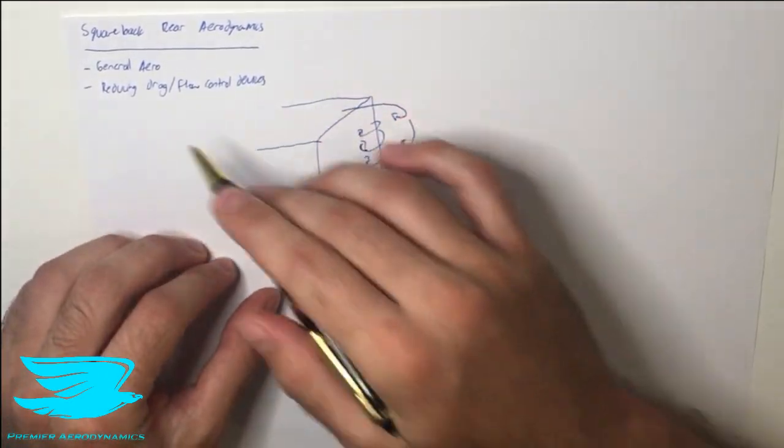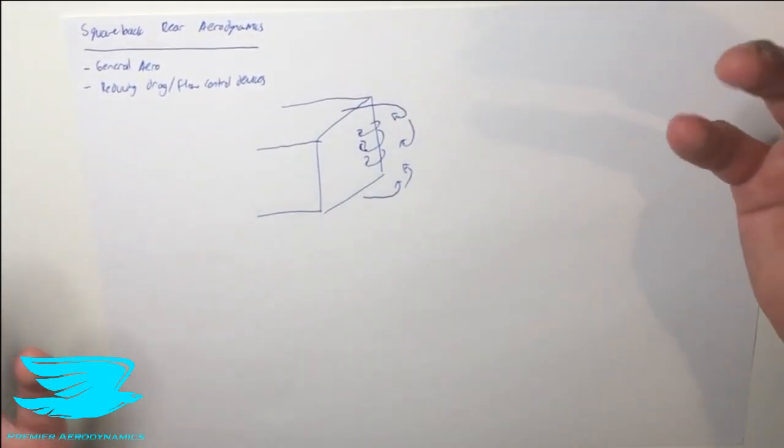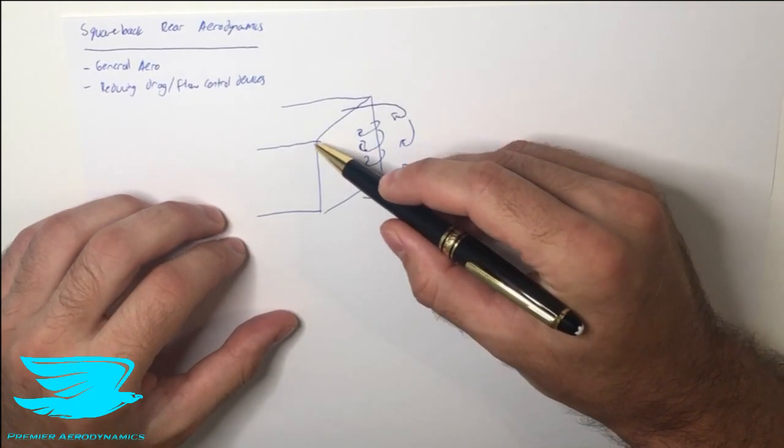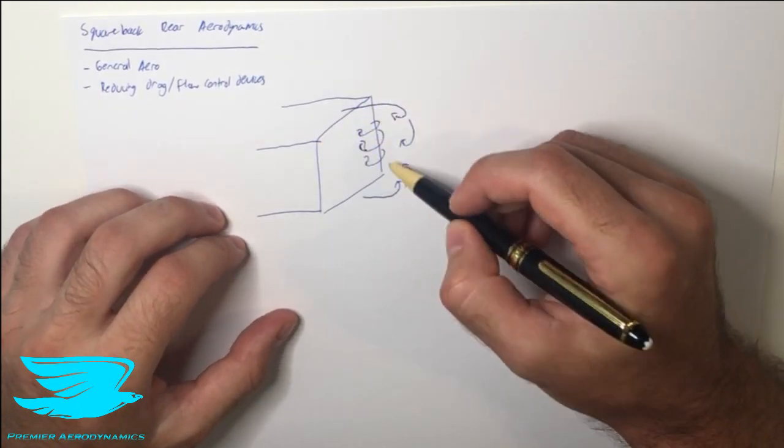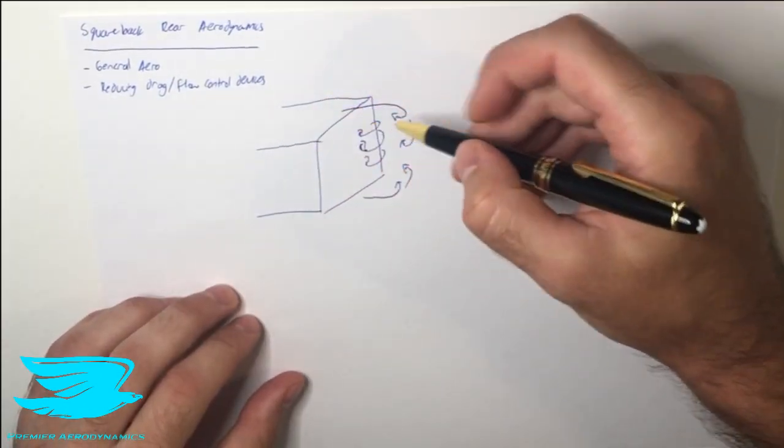So first we're going to be going through the general aerodynamics, then reducing the drag and flow control devices. A square back is exactly what it sounds like - the back of the car is very sharp, so you have like a rectangle or a square making up the back. We have the flow coming over the car.